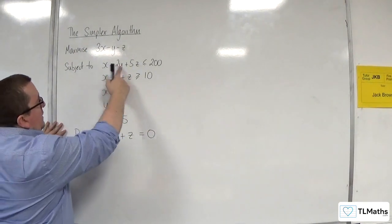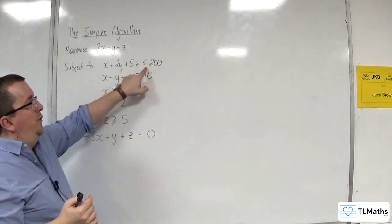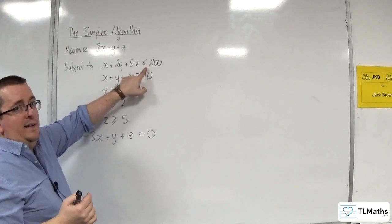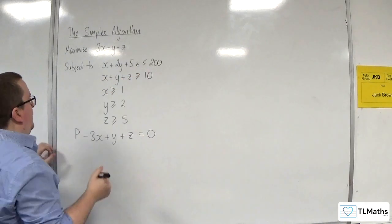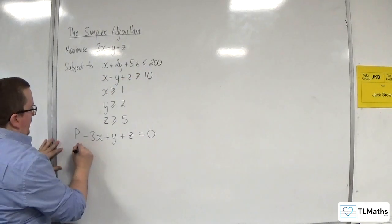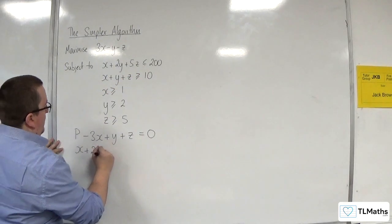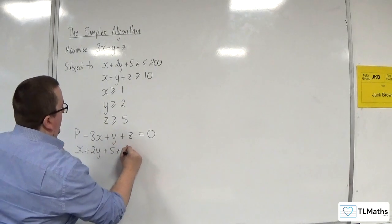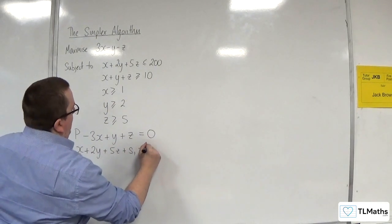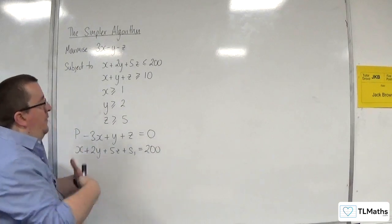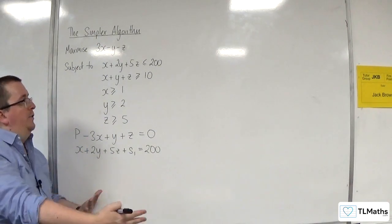Then we have this constraint. Because it's less than or equal to, I must add in a slack variable to pick up that slack. So x plus 2y plus 5z plus s1 is going to be equal to 200. I'm adding on the slack variable to bring me up to 200.